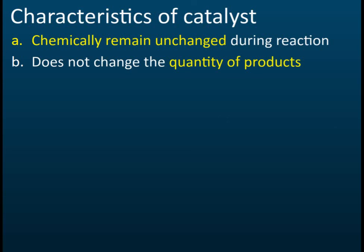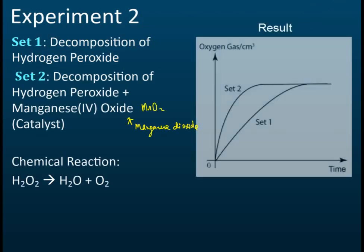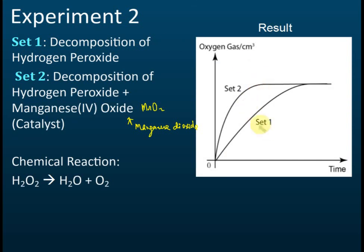Physically, a catalyst may change — for example, granules might become powder — but chemically it remains unchanged. Second, a catalyst does not change the quantity of products. In both set one and set two, the volume of gas released is the same — for example, 50 cm³. The catalyst makes the reaction faster or slower but does not change the amount of product produced.